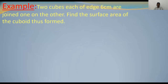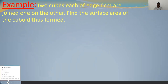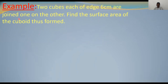Two cubes each of edge 6 cm are joined one on the other. Find the surface area of the cuboid thus formed. Listen properly, observe carefully and try to understand. Two cubes each of edge 6 cm are joined one on the other — find the surface area of the cuboid thus formed.